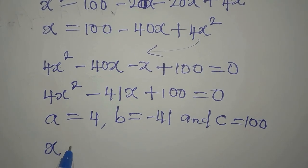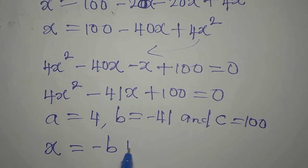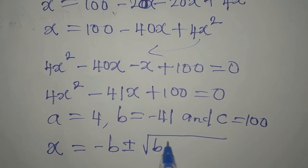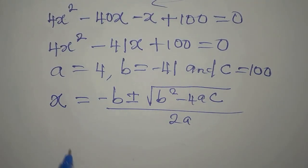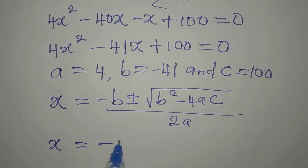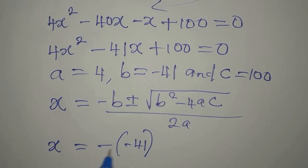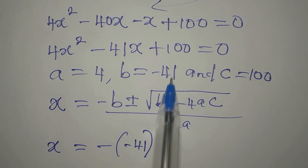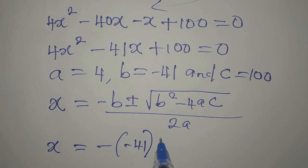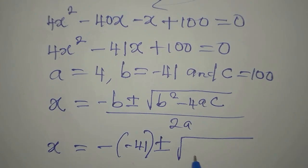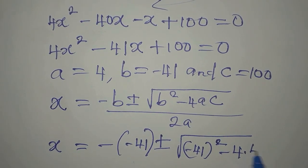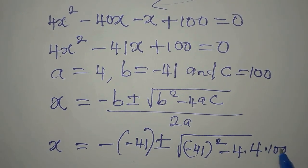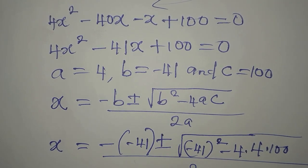The quadratic formula is: x equals negative b plus or minus square root of b squared minus 4ac, all over 2a. So our x will be minus of minus 41 — which gives positive 41 — plus or minus square root of negative 41 squared minus 4 times 4 times 100, all divided by 2 times 4.